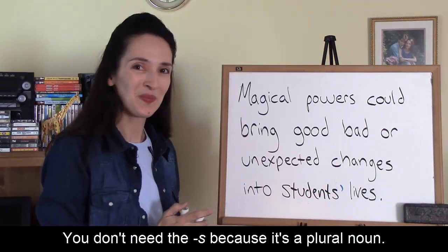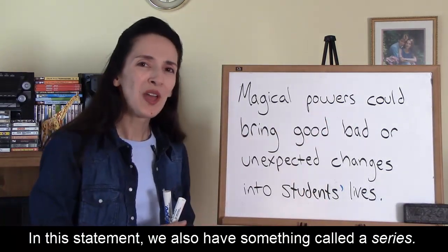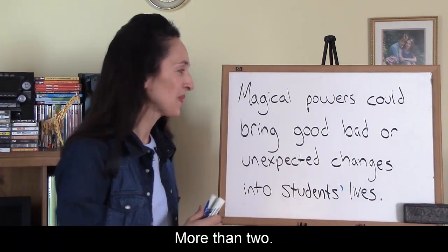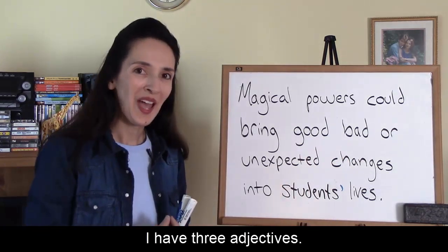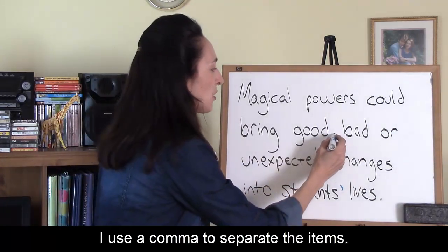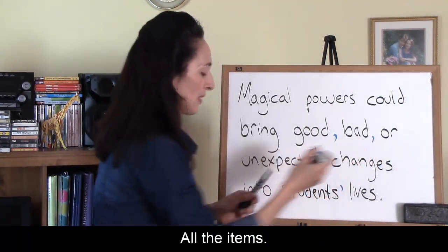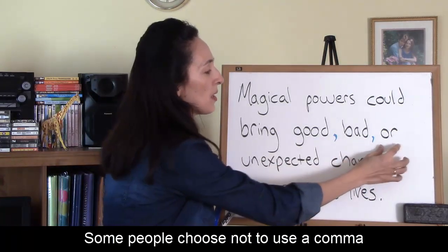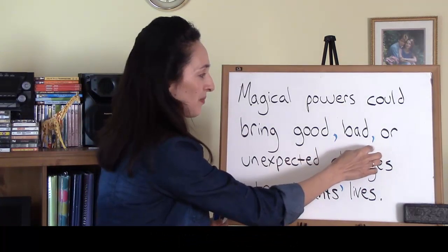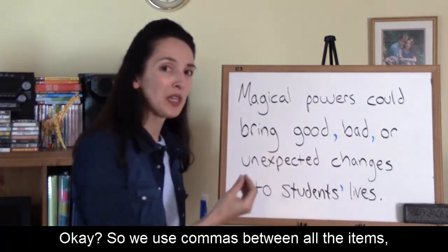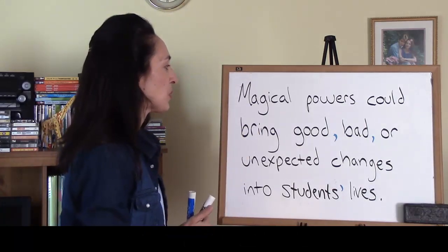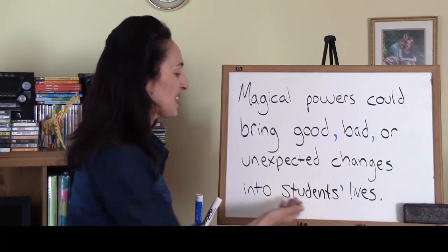In this statement we also have something called a series — a list of items, more than two: good, bad, unexpected. I have three adjectives. How do I separate items in a series? I use a comma. Some people choose not to use a comma before the conjunction OR or AND, but I feel it's best to use it. So we use commas between all the items, and I recommend using a comma even before the conjunction: 'Magical powers could bring good, bad, or unexpected changes into students' lives.'